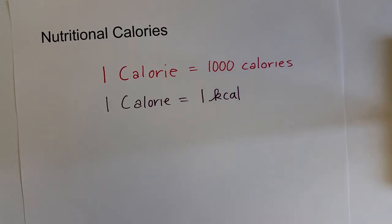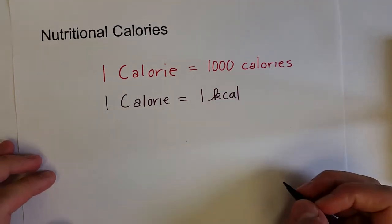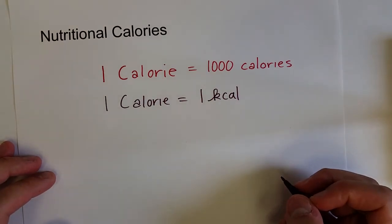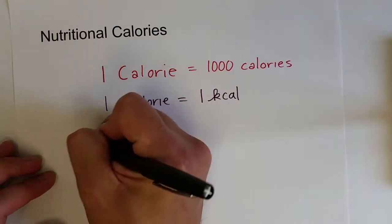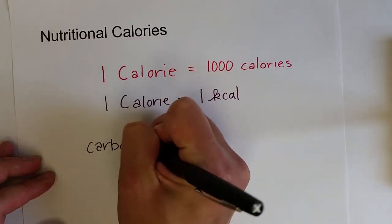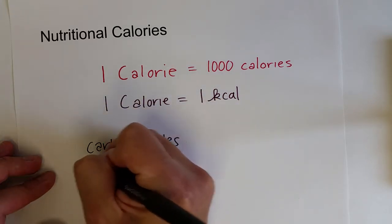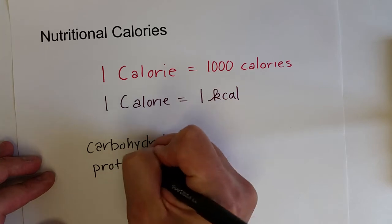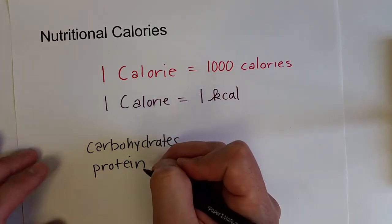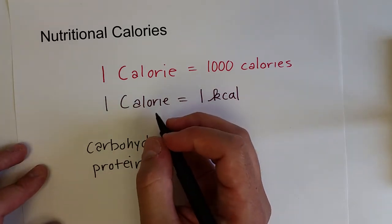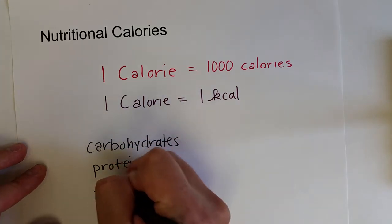And in terms of determining nutritional calories, there's often a pretty simple formula for the three main types of molecules that we get our nutrition, or our energy, from. And those are carbohydrates, sugar molecules, proteins, protein molecules, and lipids, or fats, fats and oil.